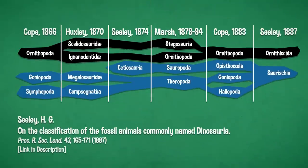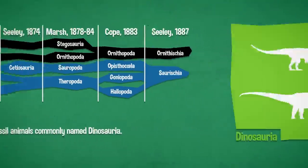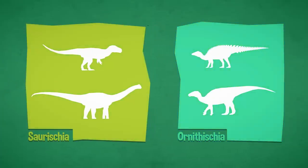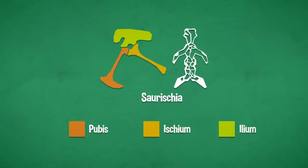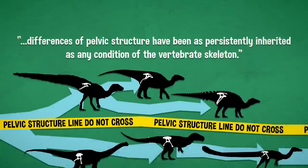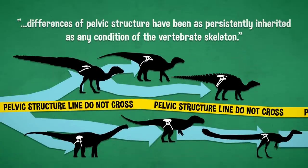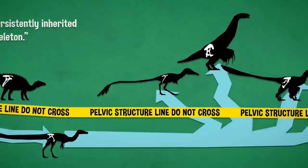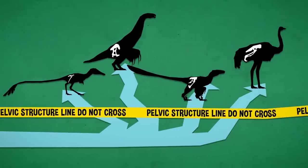Harry Seeley, in 1887, surveyed existing classifications, including Huxley's. He argued that Dinosauria was not a valid taxon. Instead, he defined two orders: Saurischia and Ornithischia. In Saurischia, the pubic bones point forward and run together, and the vertebrae are pneumaticized. In Ornithischia, the pubic bones point both forward and backward, parallel to the ischium, and the vertebrae are solid. Seeley argued there was no way dinosaurs could have morphed between the two hip plans, so they must have been separate groups.